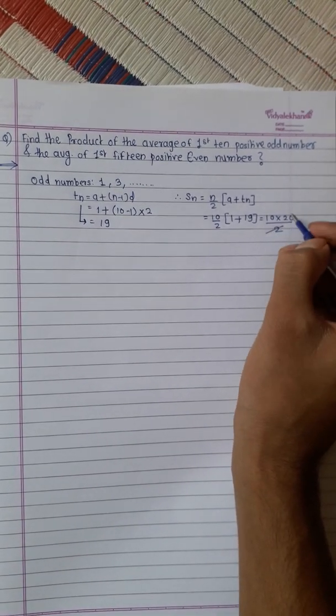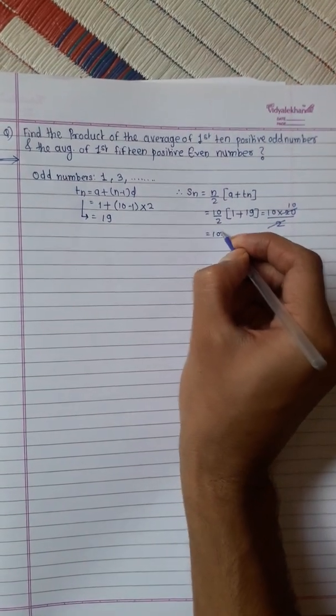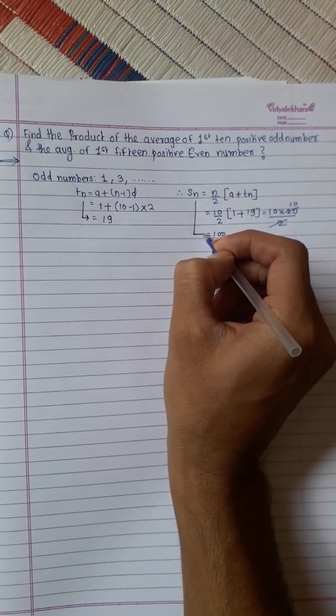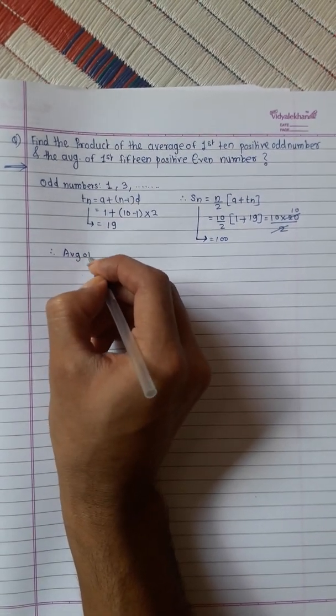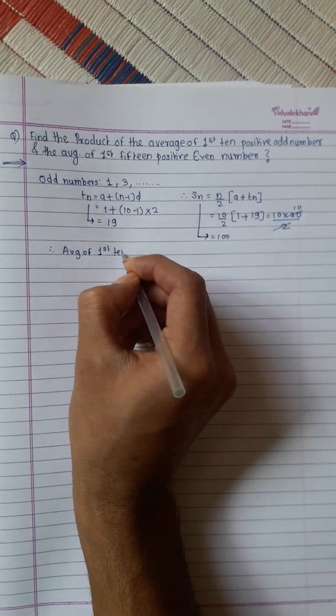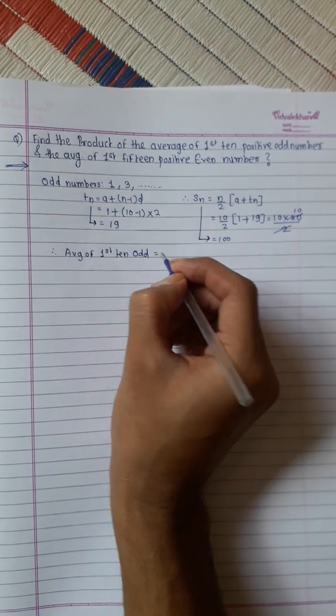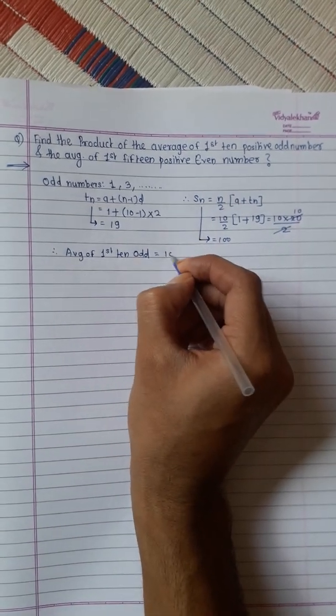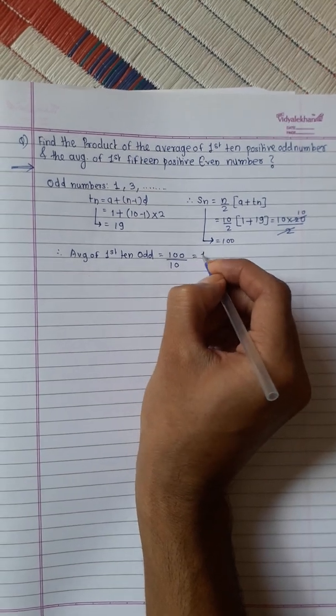This 2 cancels, this will be 100. Therefore, average of first 10 odd numbers equals sum, this is 100, divided by total number is 10. This will be 10.